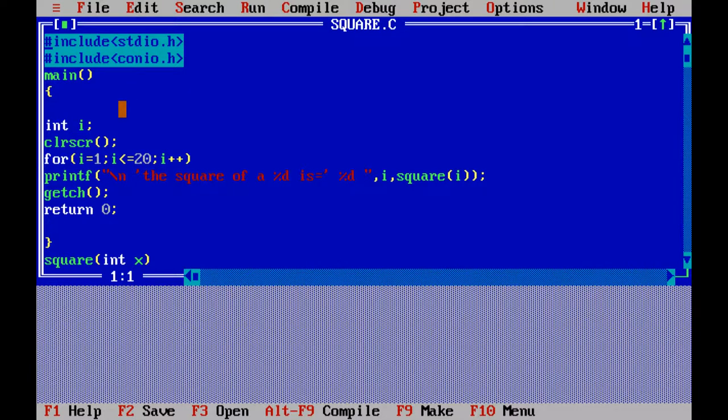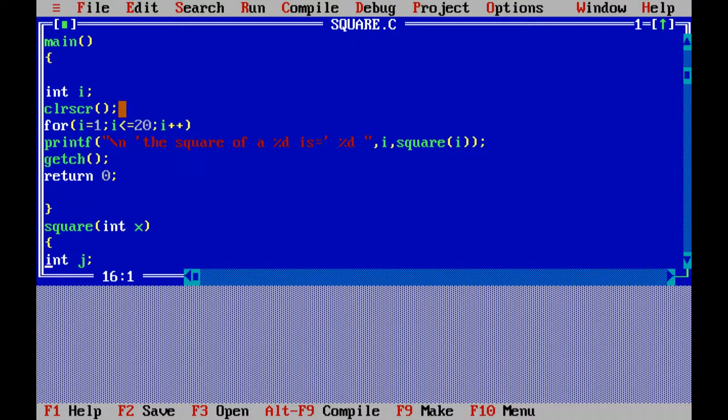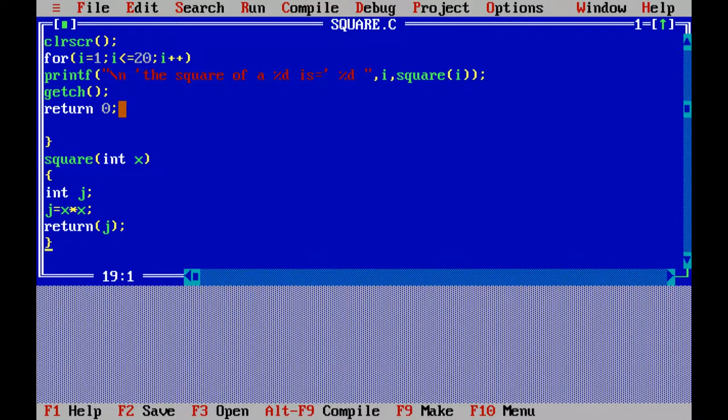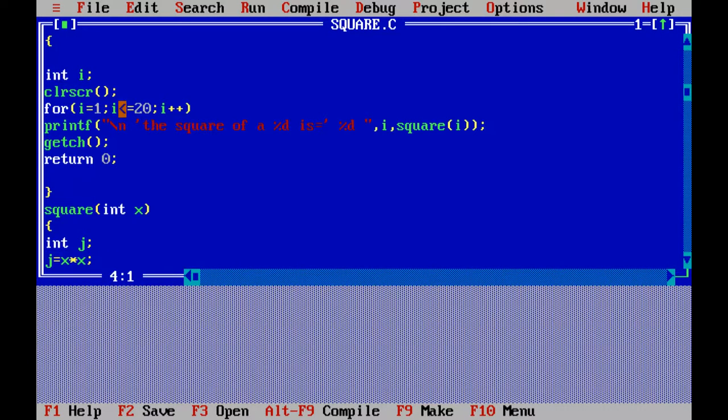See, the same program: #include stdio.h, main function—main program, this is int i, clrscr. And this is a function calling. Here square is function calling, and this is the function definition: square(int x). This is the function definition. So we will see the output of this program.